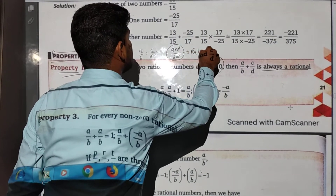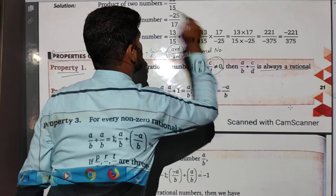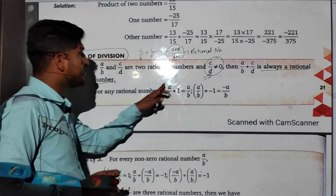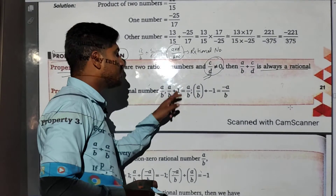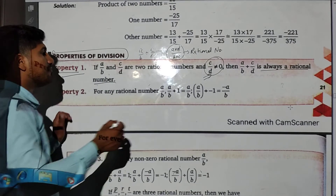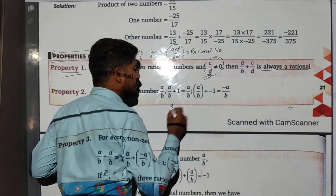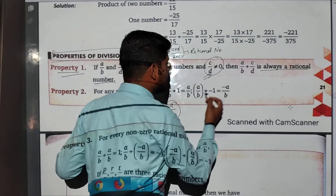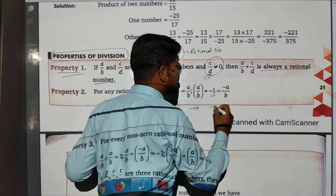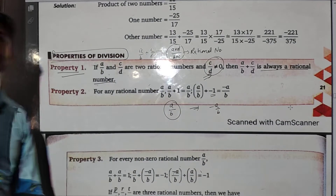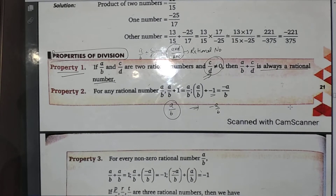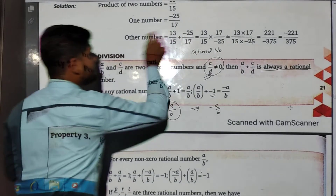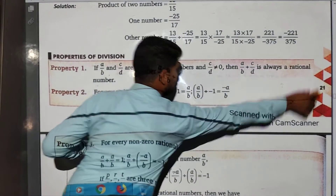The second property: if we divide a/b by 1, we get a/b — the rational number does not change. And if we divide a/b by -1, the sign of the rational number changes: positive a/b becomes -a/b. Remember these two properties of division.